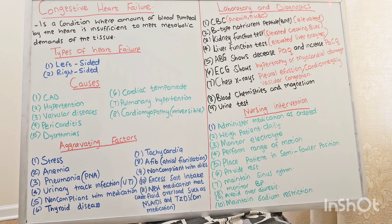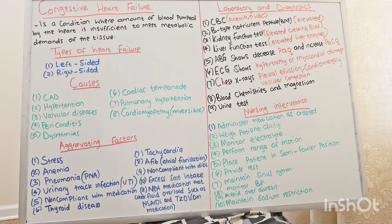Now let's talk about laboratory and diagnostic findings. They can do a CBC, which will show anemia and elevated WBC. They can also do BNP, which will be elevated. Kidney function tests will show elevated creatinine and BUN. Liver function tests will show elevated liver enzymes. ABG will show decreased PaO2 and increased PaCO2. ECG shows hypertrophy or myocardial damage. Chest X-ray will show pleural effusion, cardiomegaly, and vascular congestion. They can also do blood chemistry, magnesium, and urine tests.